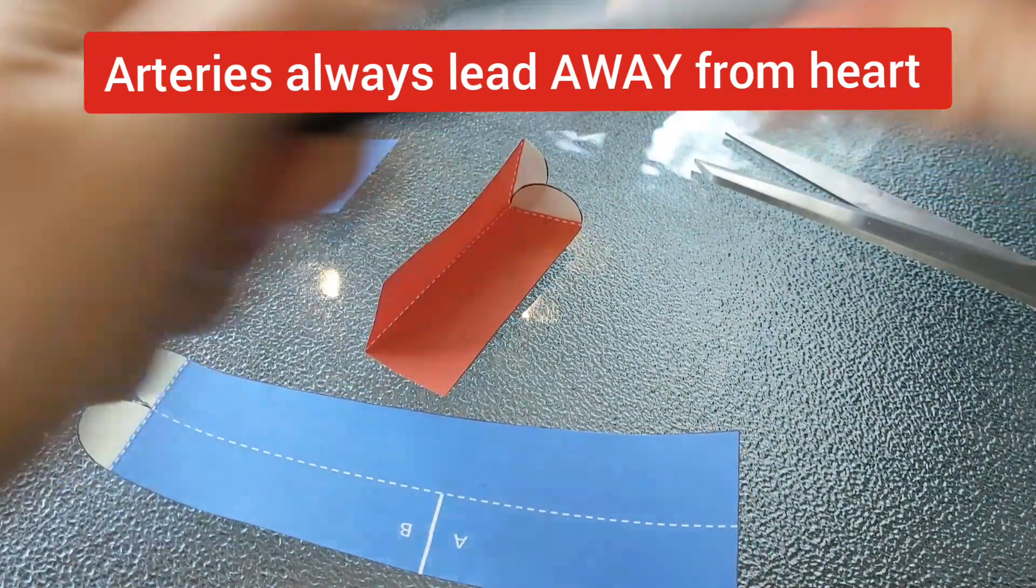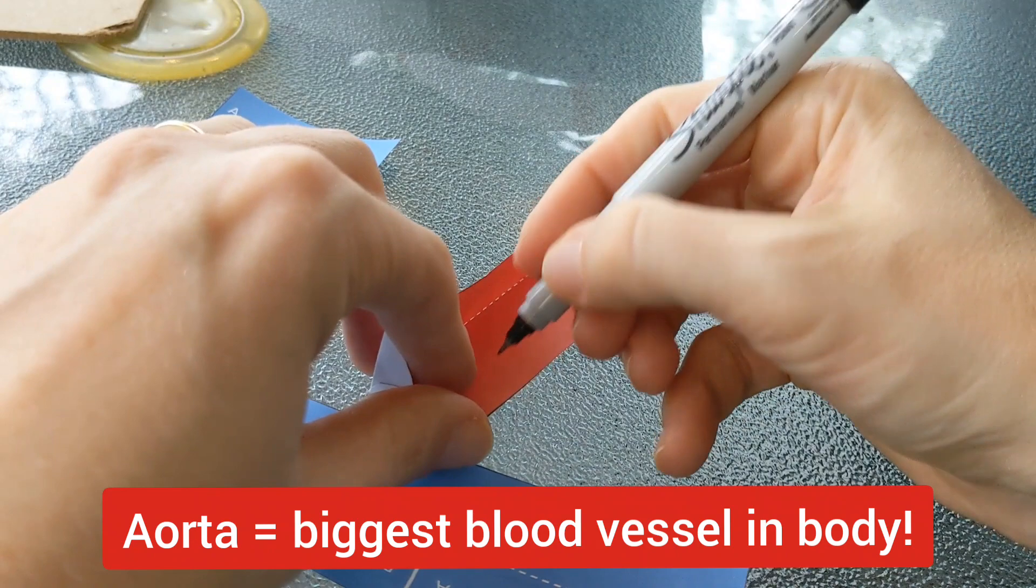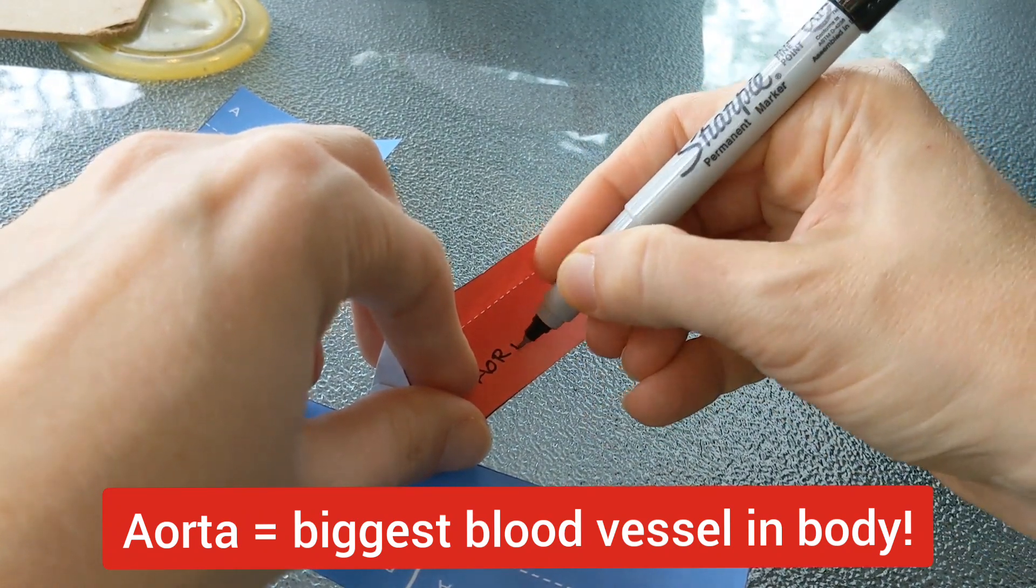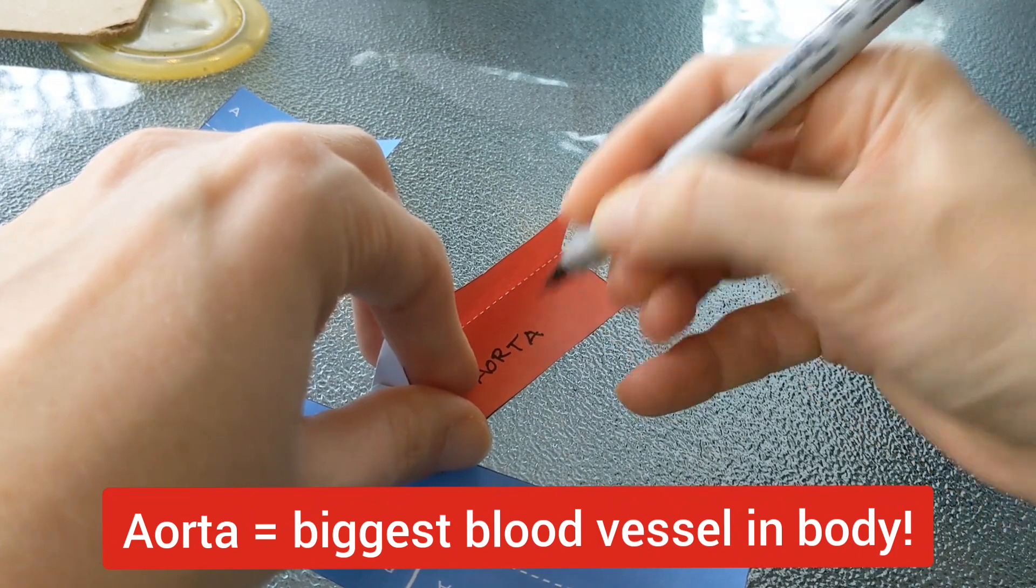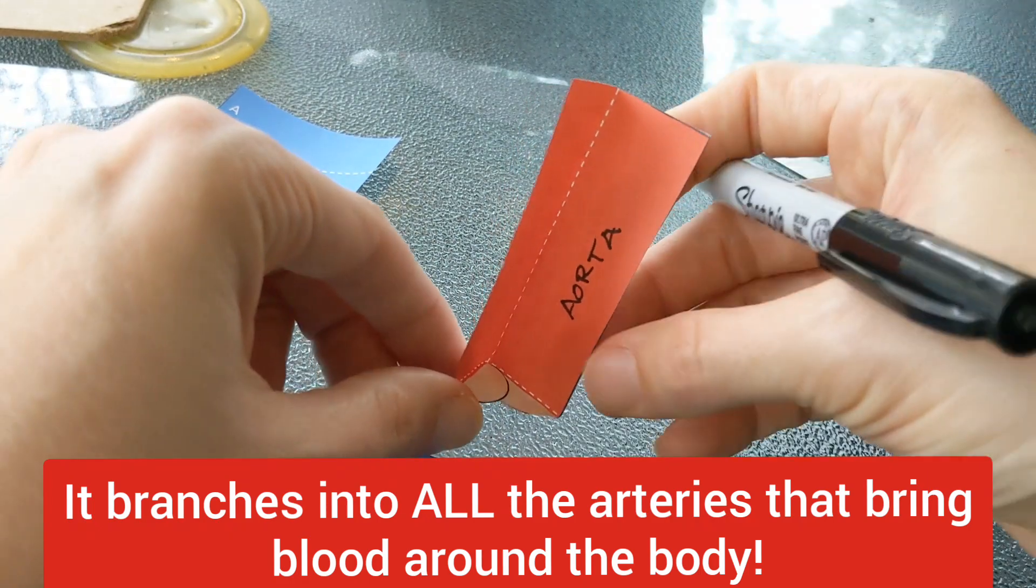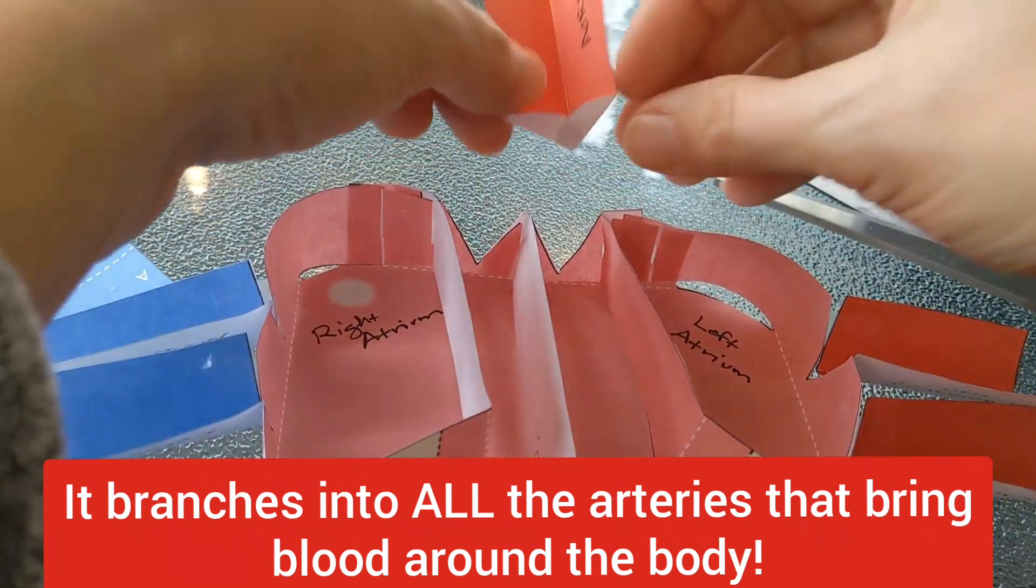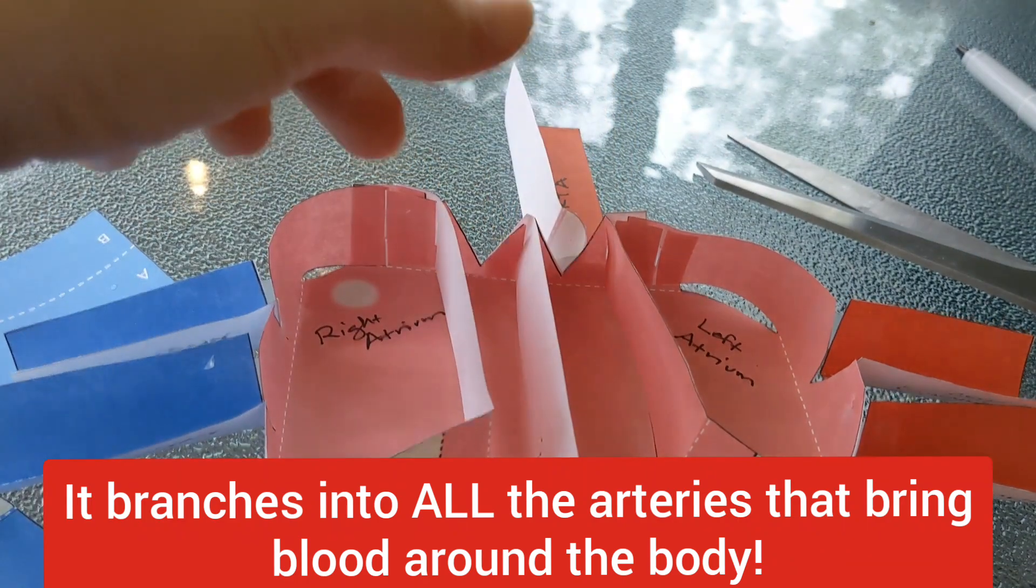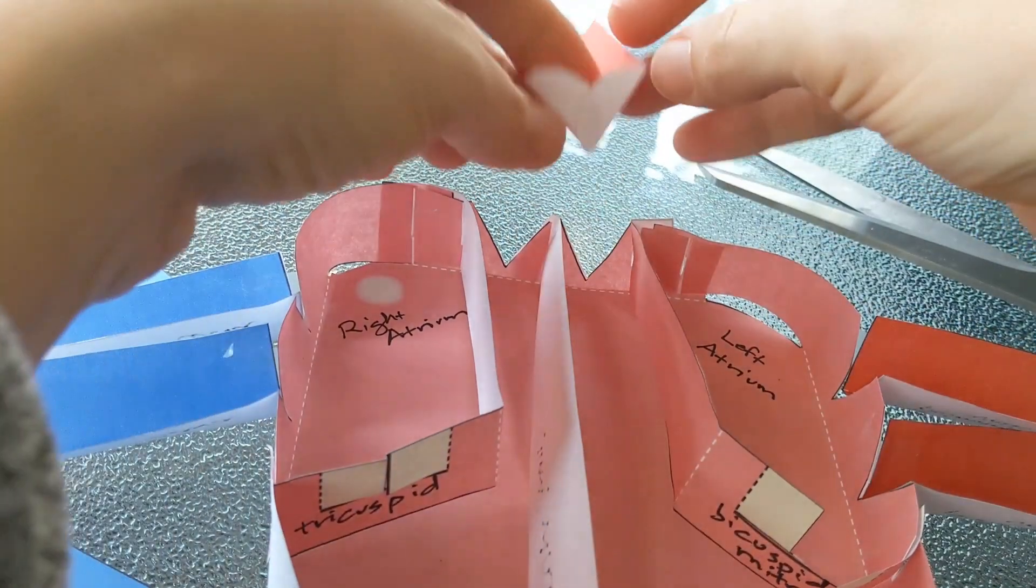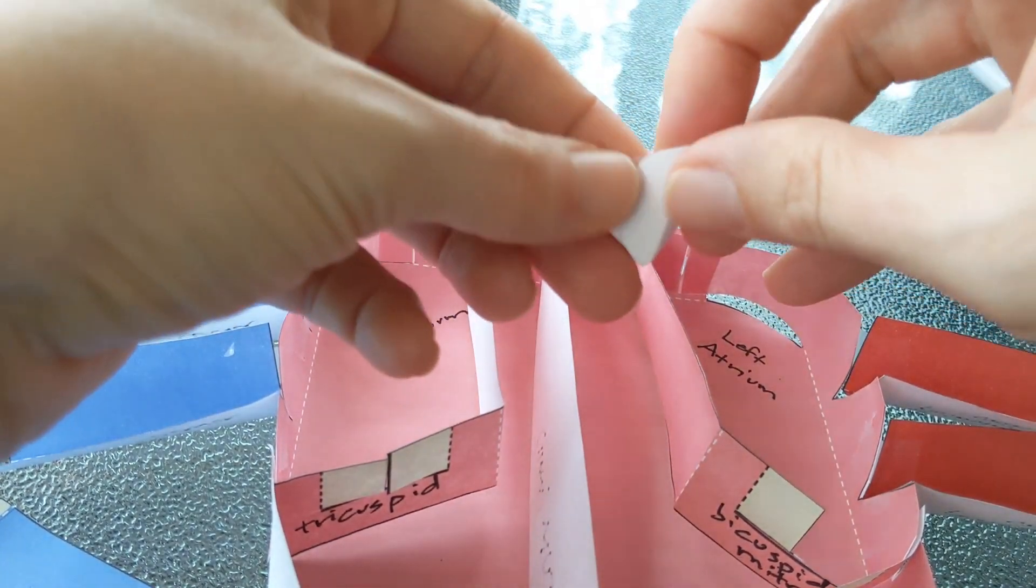This represents our aorta. The aorta is the biggest blood vessel in the body. It's as big as a fat highlighter or even a garden hose. And it has super high pressure because the blood is being pumped out of the heart. Let's go ahead and place our aorta. I found it easiest with this to first tape the valve like so.